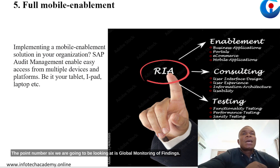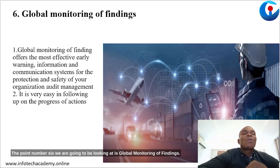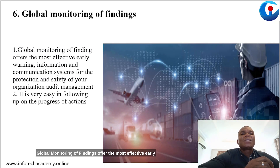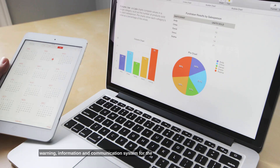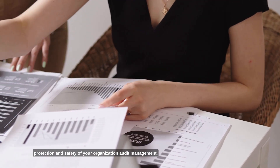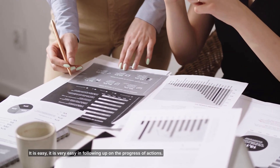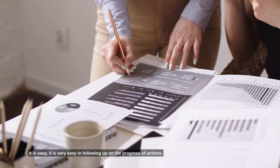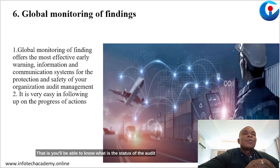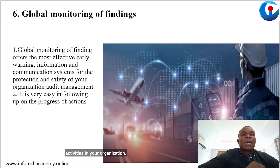Point number six is global monitoring of findings. Global monitoring of findings offers the most effective early warning information and communication system for the protection and safety of your organization's audit management. It is very easy to follow up on the progress of actions — you will be able to know the status of audit activities in your organization.